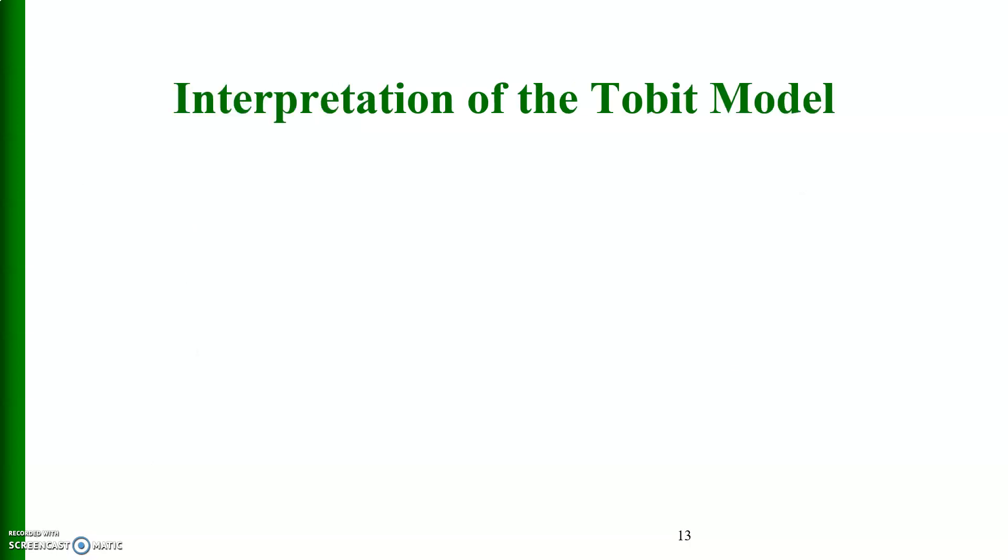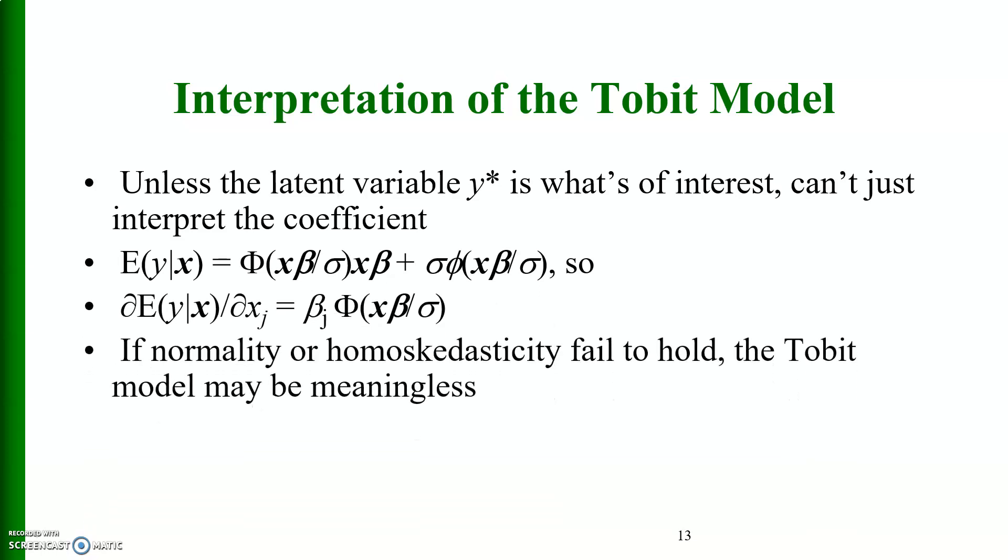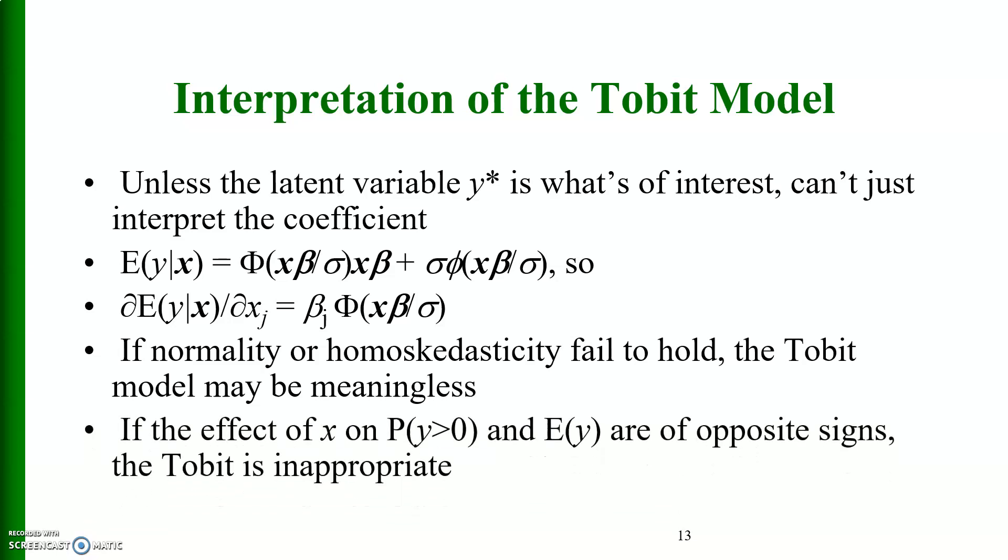How can we interpret the tobit model? Unless the latent variable y star is what is of interest, we cannot just interpret the coefficient. If normality or homoscedasticity fail to hold, the tobit model may be meaningless. If the effect of x on probability of y is greater than 0 and expected value of y are of the opposite signs, the tobit model is inappropriate.